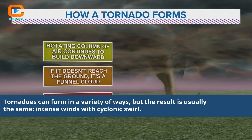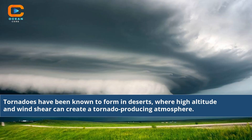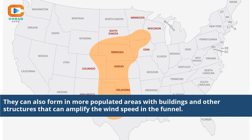Tornadoes can form in a variety of ways, but the result is usually the same — intense winds with cyclonic swirl. Tornadoes have been known to form in deserts, where high altitude and wind shear can create a tornado-producing atmosphere. They can also form in more populated areas with buildings and other structures that can amplify the wind speed in the funnel.